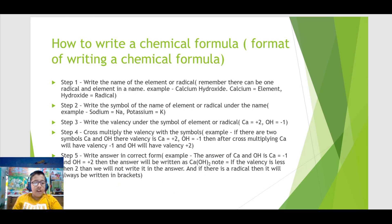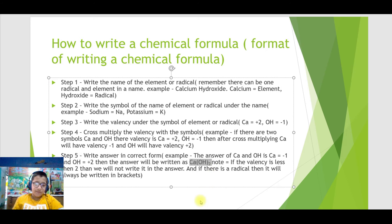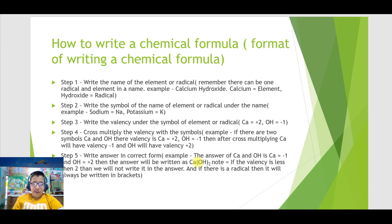Note: if the valency is less than 2 — like Ca which became minus 1 after cross-multiplying — we do not write it in the answer. Also, the plus and minus signs are just for understanding and are not written in the final answer. If there is a radical, it is always written in brackets. Since OH (hydroxide) is a radical, it is written in brackets as (OH)2.